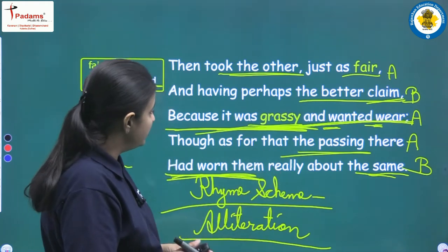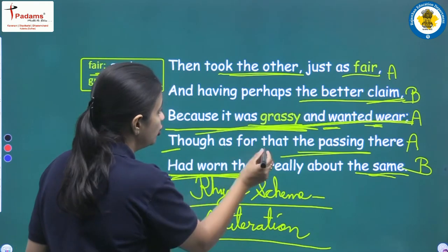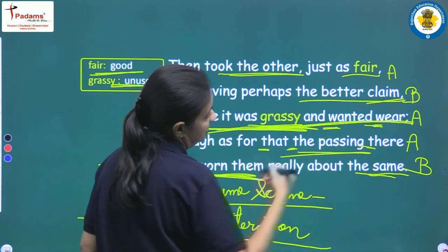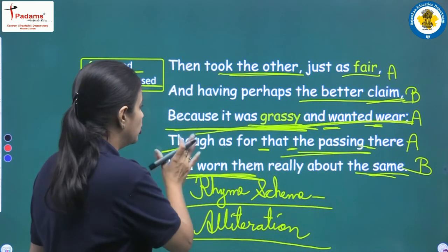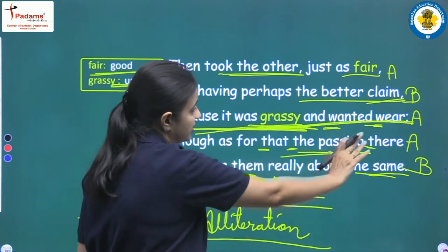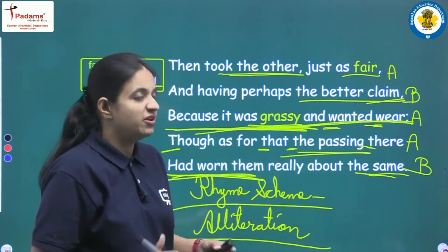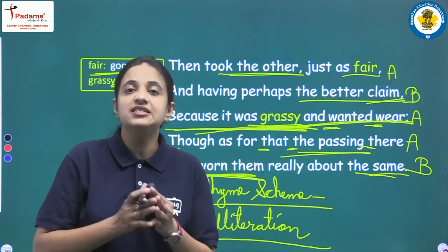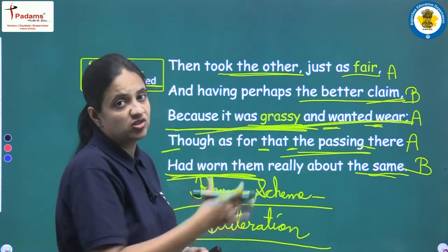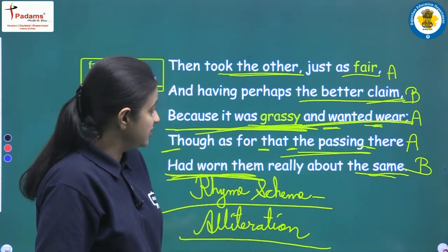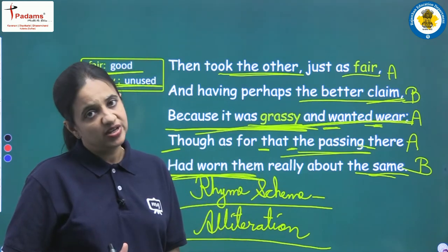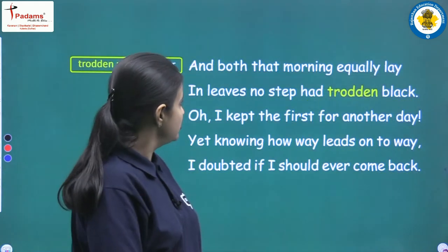Another example of alliteration in the second stanza is 'Do, that, the, there' — all these words share the same starting consonant sound, which is the TH/D sound. This repetition of the same consonant sound at the beginning of words is alliteration.